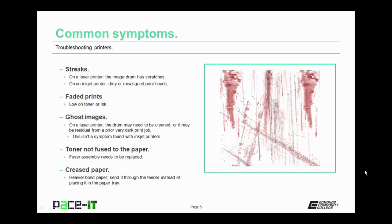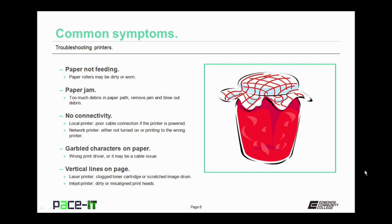If you're having a problem with creased paper, that's usually because you're using a heavier bond paper. So send it through the feeder instead of placing it in the paper tray. If the paper is not feeding or not feeding correctly, the paper rollers may be dirty or worn. If you're having problems with paper jams, you usually have too much debris in the paper path — remove the jam, then use compressed air to blow out the debris.